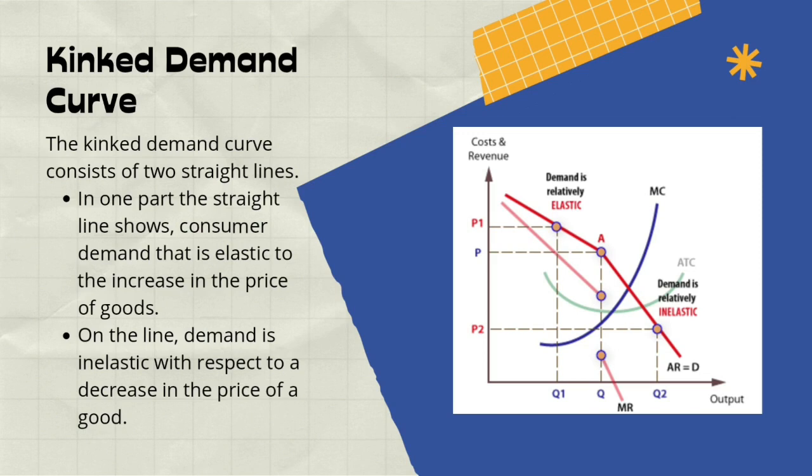It can be said that consumers are very sensitive to rising product prices. We can also see a purple line here showing the marginal cost. Marginal cost is the increase in total cost resulting from producing one additional unit of output. For example, if the firm produces 1000 units, the additional cost of increasing output to 1001 units is called the marginal cost.